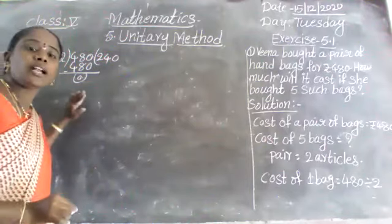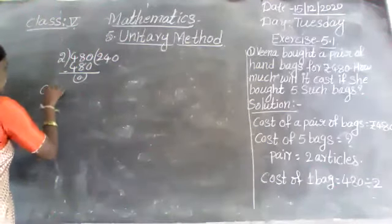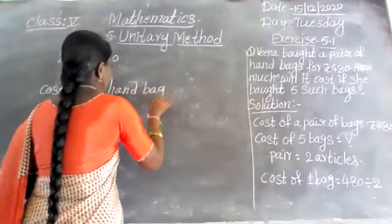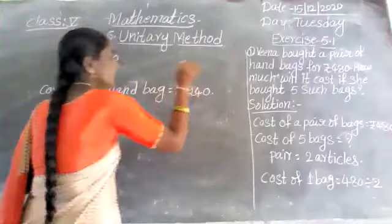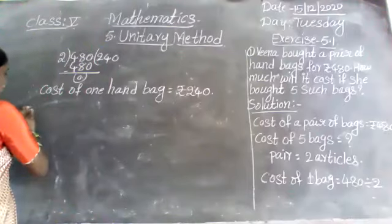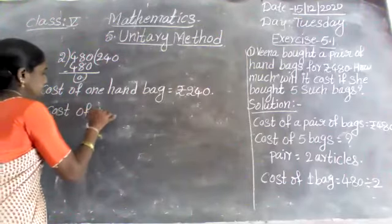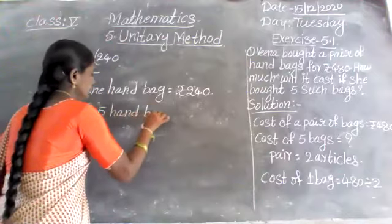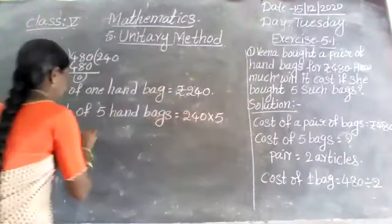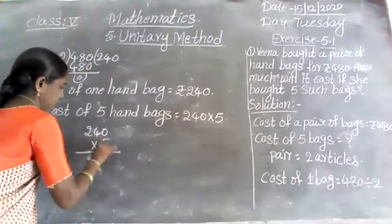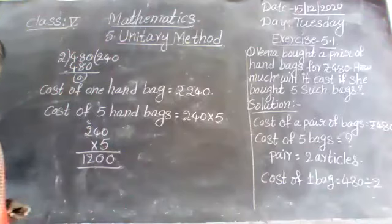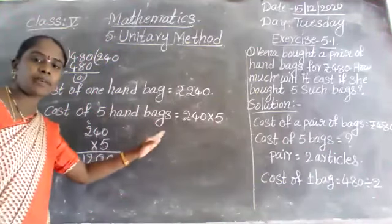Cost of one handbag is 240 rupees. Now we find the cost of five bags: 240 × 5 = 1200. The cost of five handbags is rupees 1200.